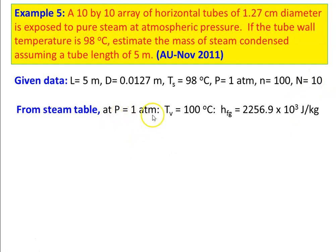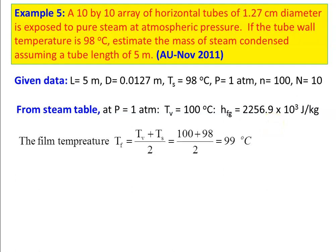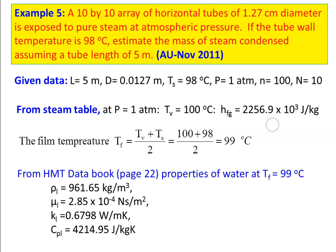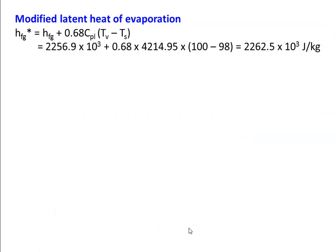From the steam table at 1 atmosphere, Tv = 100°C and HFG = 2256.9 × 10³ J/kg. The film temperature is (100 + 98) / 2 = 99°C. Properties of water at 99°C: ρL = 961.65 kg/m³, μL = 2.85 × 10⁻⁴ N·s/m², KL = 0.6798 W/m·K, and CPL = 4214.95 J/kg·K. The modified latent heat of evaporation: HFG* = HFG + 0.68 × CPL × (Tv − Ts), giving HFG* = 2262.5 × 10³ J/kg.